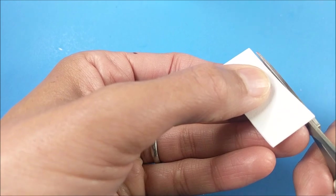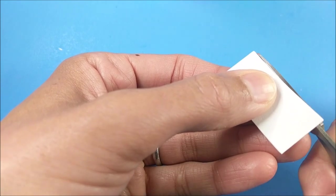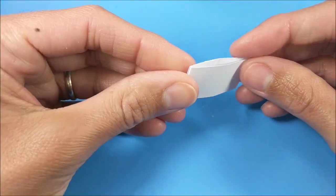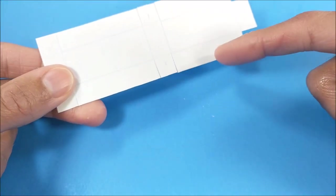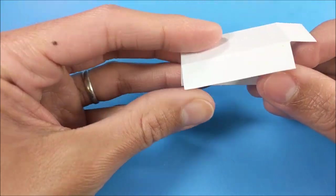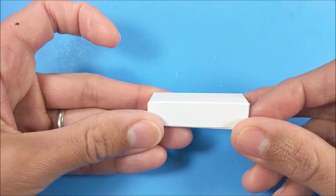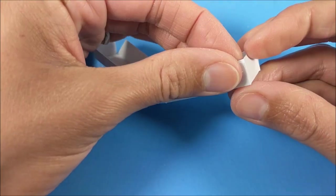I trim as needed in case it doesn't line up perfectly. And finally, for the bottom piece, this last box, I'm scoring, folding, and assembling like so.